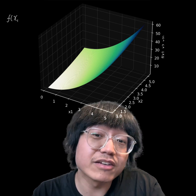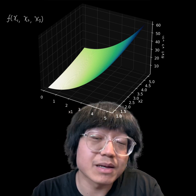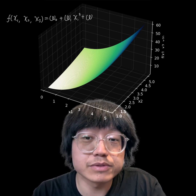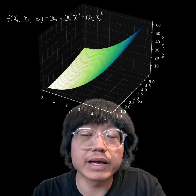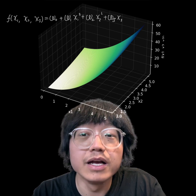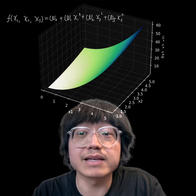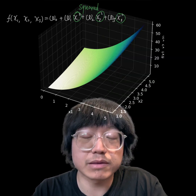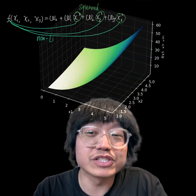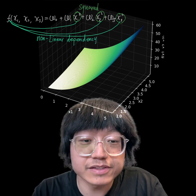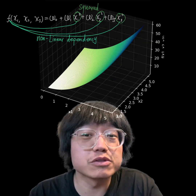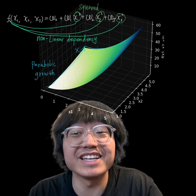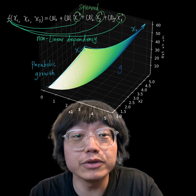The second function, f(x₁, x₂, x₃) = ω₀ + ω₁x₁² + ω₂x₂² + ω₃x₃². Each feature, x₁, x₂, and x₃, is squared, which again introduces a nonlinear dependency. This graph shows the squared dependencies creating parabolic growth as either x₁ or x₂ increases, and this function grows rapidly because the squared term amplifies the effects of larger values.